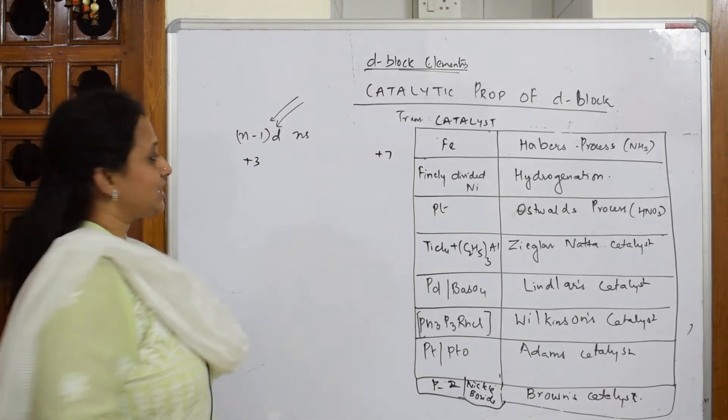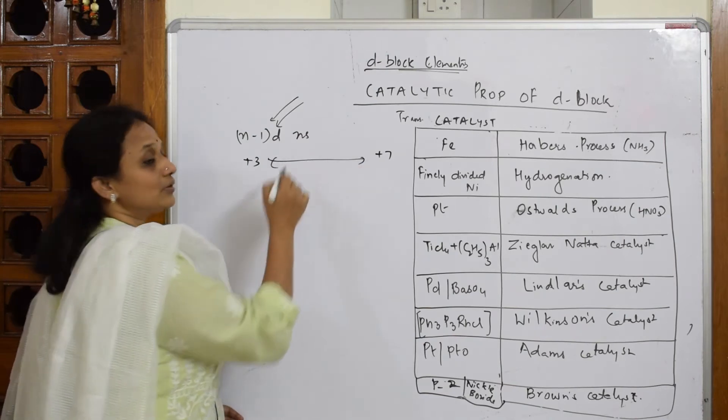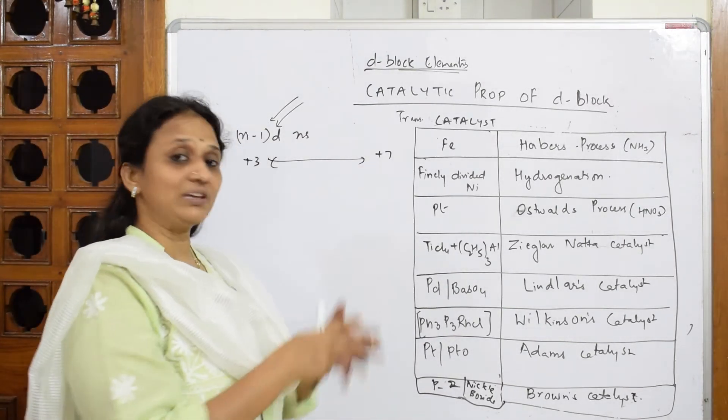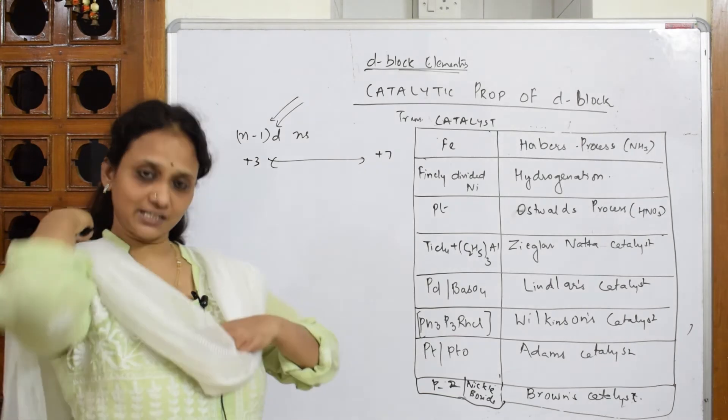Because of this variable oxidation state, these d-block elements are going to act as very good catalyst. What is the use? How are we linking between catalyst and oxidation state? Let's see.